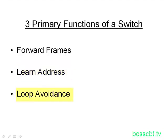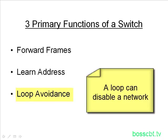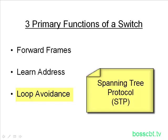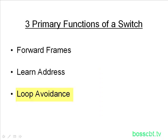The third function is loop avoidance. You do not want loops on your network — otherwise you create storms of traffic, and it can bring down a network. You might have heard of something called Spanning Tree Protocol, STP. That's involved with loop avoidance, and we cover that in the loop avoidance tutorial.